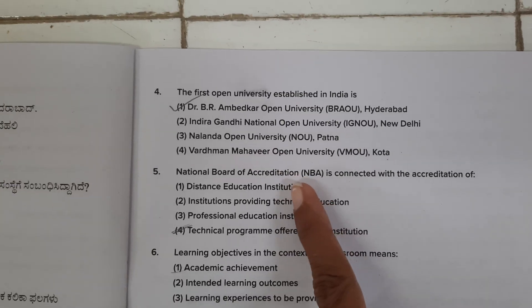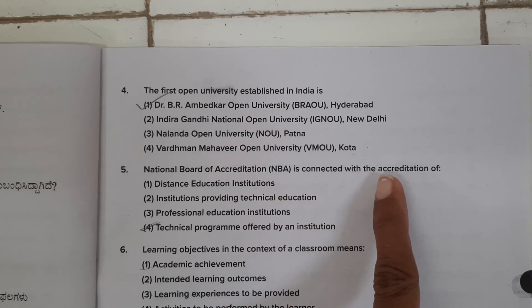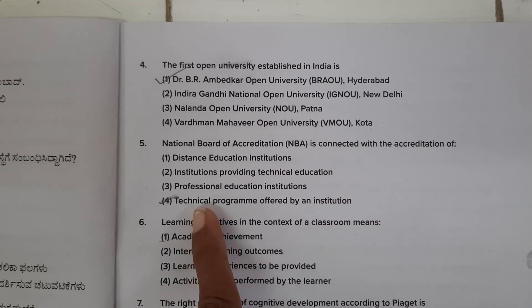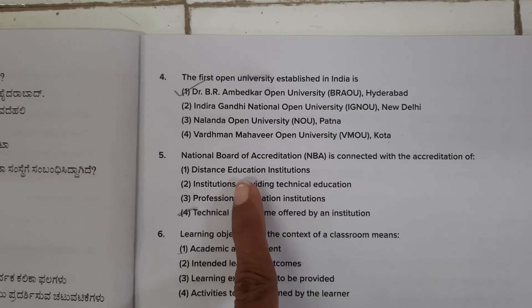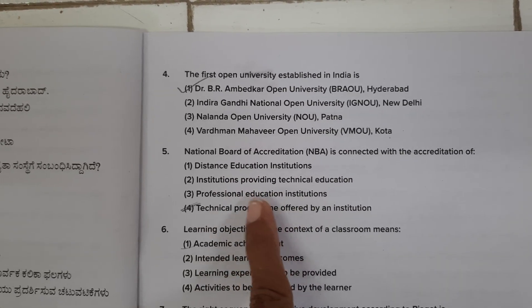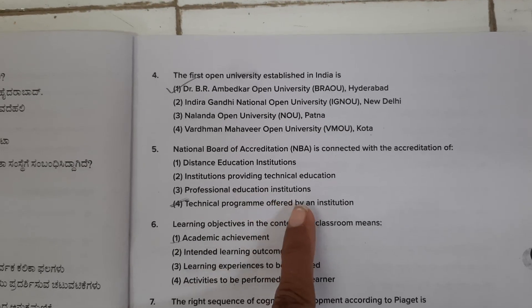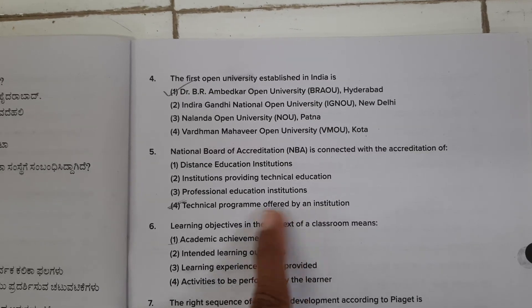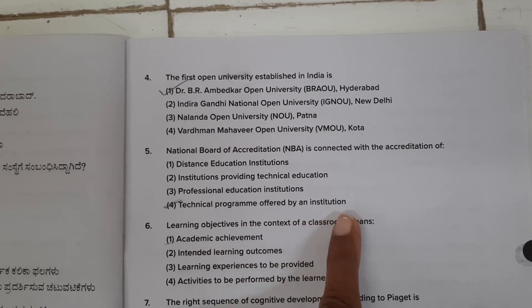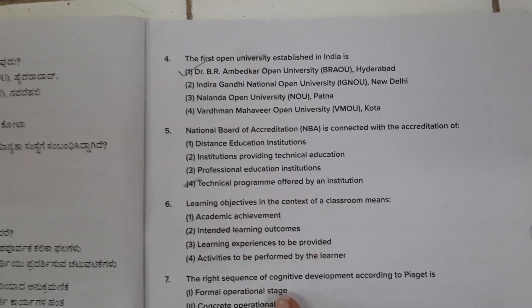NBA — National Board of Accreditation — is connected with the accreditation of distance education, institutions providing technical education, professional education institutions, or technical programs offered by an institution. The fourth option is correct.